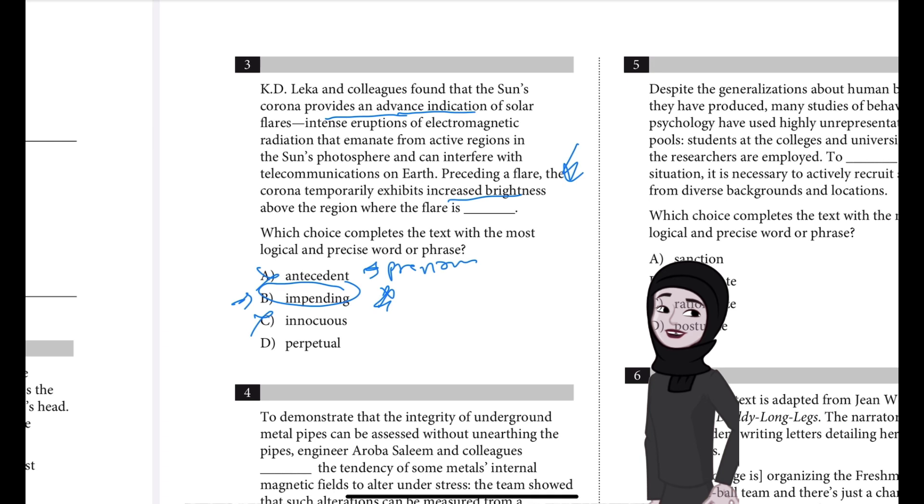And choice C, innocuous, that is not correct because innocuous means harmless. This does not logically complete the text since solar flares can interfere with communications on Earth. They cannot reasonably be described as innocuous or harmless.